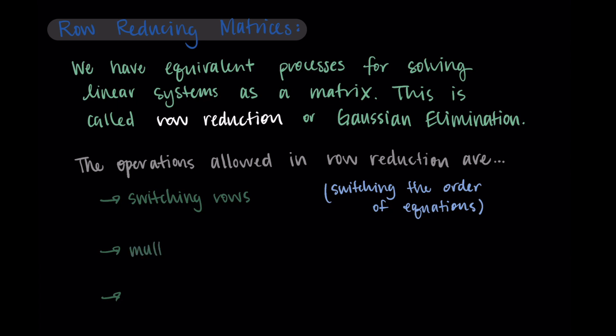Then the next operation that we're allowed to do is to multiply a row by a constant. We're allowed to do this because we are allowed to multiply both sides of the equation by the same value. So as long as we do something to both sides of the equation, this is valid. And so we can just multiply the whole row by a constant and this is equivalent.